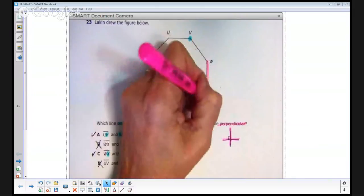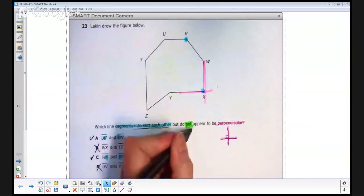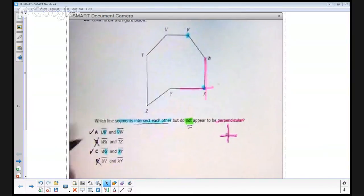These lines here are the ones that are perpendicular. And since we want not perpendicular, then we are not going to choose answer choice C, WX and XY.